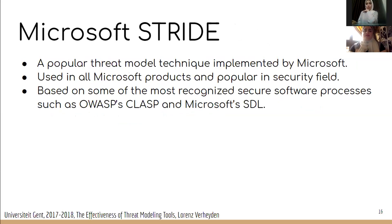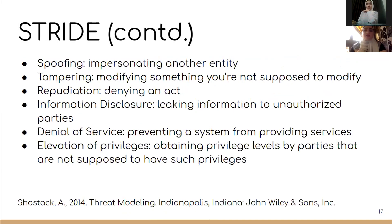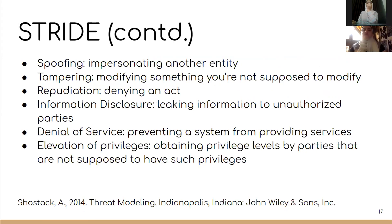The six letters in STRIDE stand for each security threat category. Spoofing is impersonating another entity by falsified data. Tampering is modifying something you are not supposed to modify. Repudiation is denying an act over the validity of a system or program. Information disclosure is leaking information to unauthorized parties. Denial of service is preventing a system from providing its services — like a server crash. Elevation of privileges is obtaining privilege levels by parties not supposed to have those authorities.